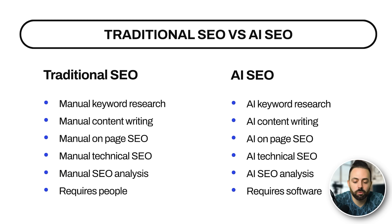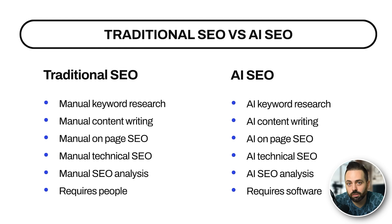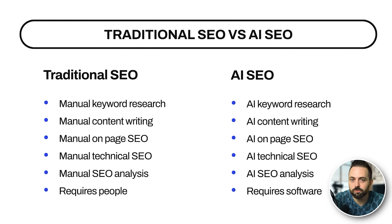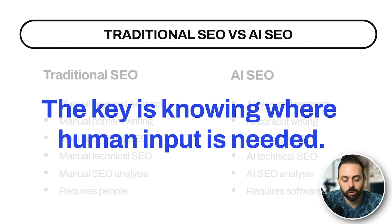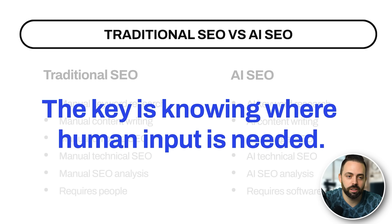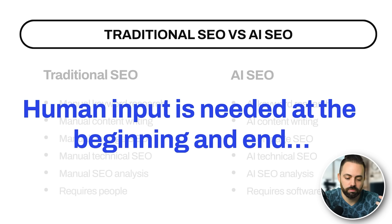AI SEO is a little different. You can do keyword research with AI, write the content, learn about on-page SEO, do technical audits, analyze pages — and it mainly requires software like Claude and ChatGPT, which are free. A lot of videos just promise to copy and paste everything with AI, but that's not what this is about. This is about using AI to speed up the process and knowing where human input is needed.